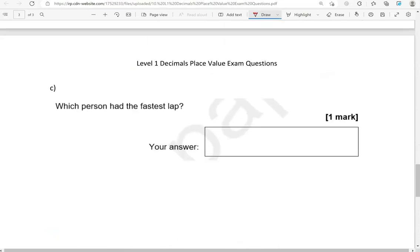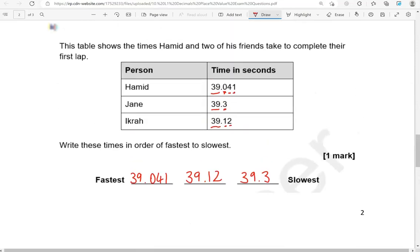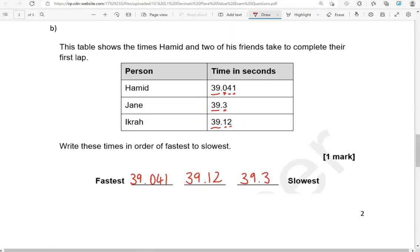Which person had the fastest lap? So fastest was this one with 39.041, and that was Hamid.